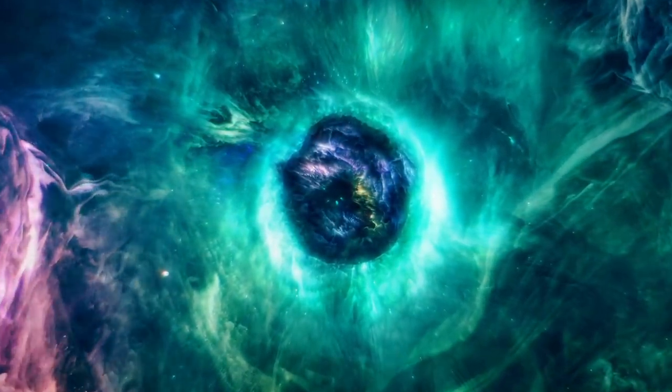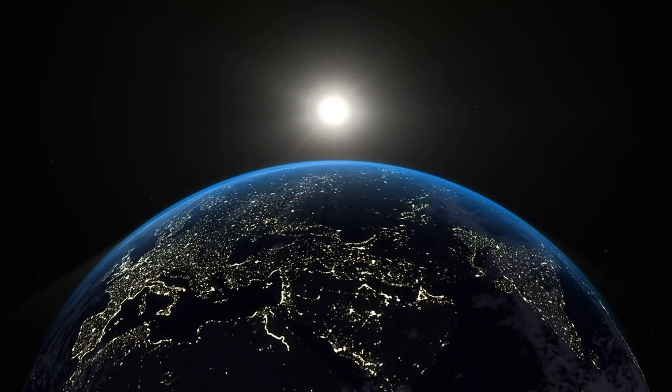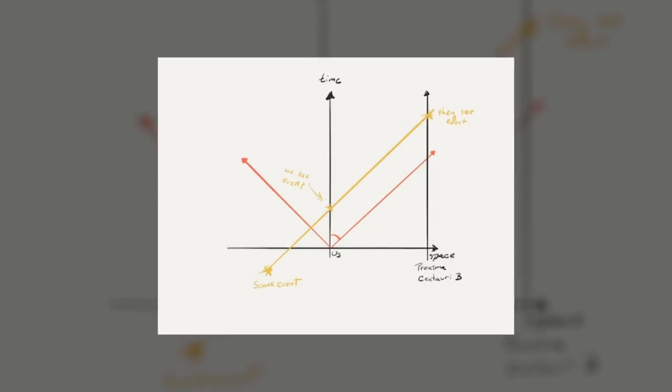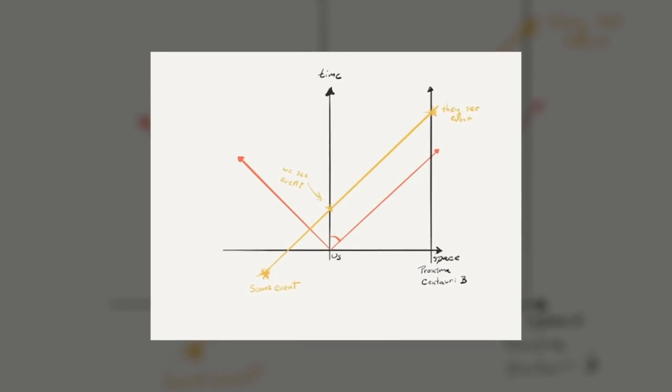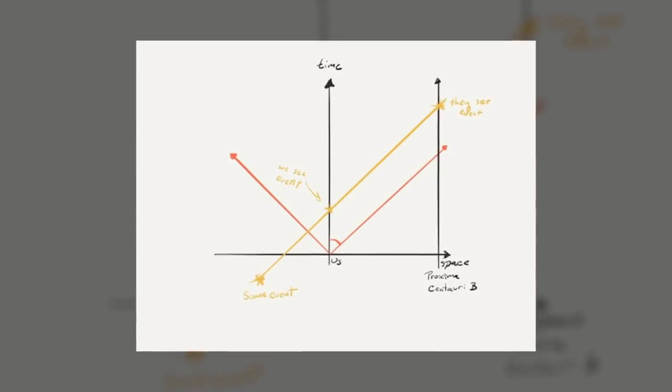Now let's imagine that some event occurs away from Earth, oriented in such a way that the light from the event hits us before it reaches Proxima Centauri. The space-time diagram for that would look like this: first we see the light, then the light reaches Proxima Centauri.